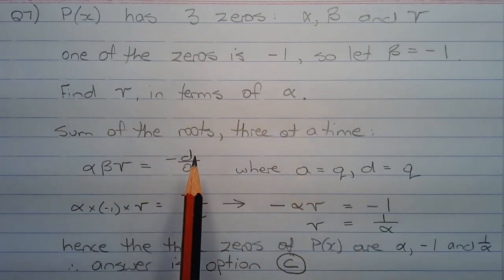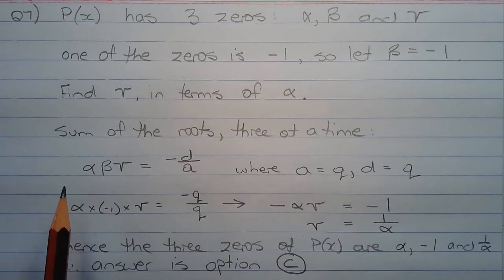Now the sum of the roots three at a time is αβγ = -d/a, where a = q and d = q. So α × (-1) × γ = -q/q, which gives us -αγ = -1.